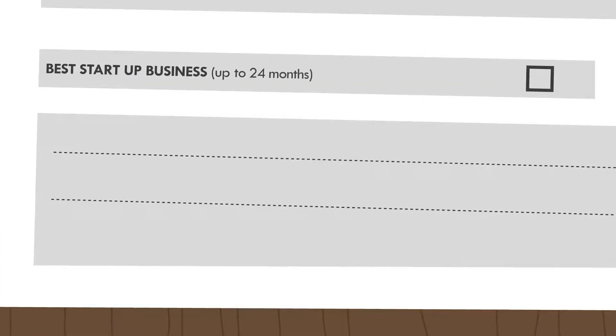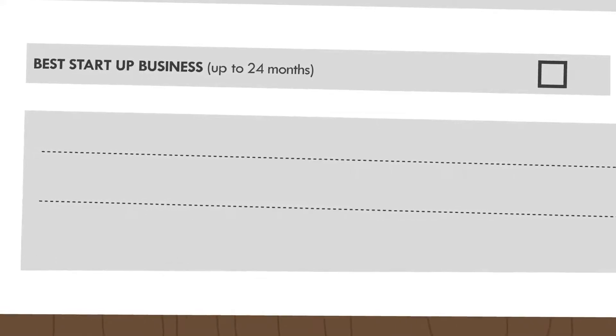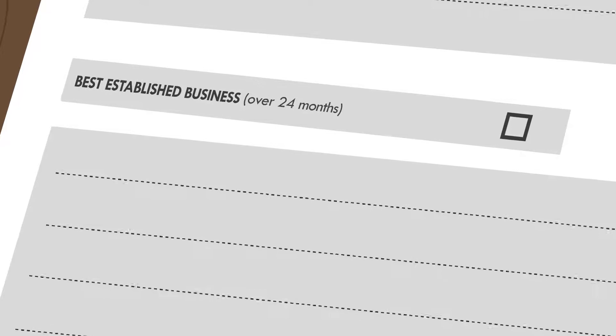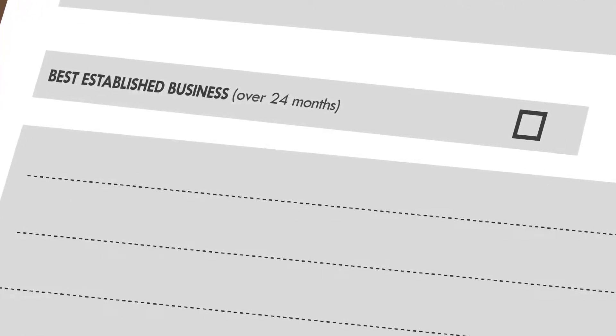Next is the best startup category which was tailor made for any business that is under 24 months. Got a business over 24 months? No better boy! The Ireland's Best Young Entrepreneur Competition has got you covered with the first convenient Best Established Business category.